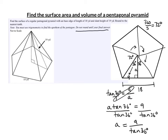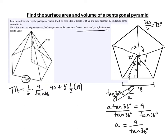Now we're ready to go. The total surface area is the pentagon plus the five triangles. The pentagon area is one-half times the apothem — nine divided by the tangent of 36 — times the perimeter, which is five times 18 equals 90. Plus five times one-half base times height, where the base is 18 and the slant height is 19.